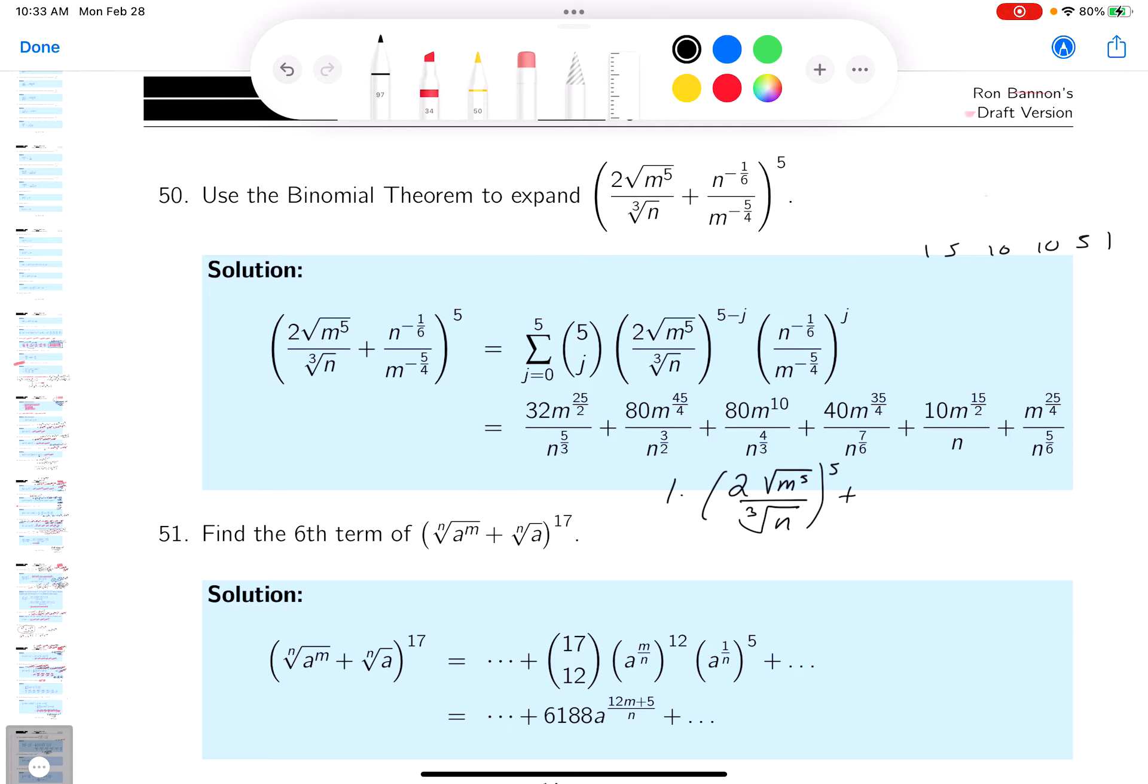What's the next term going to be? Plus 5, and then you get 2, the root of m to the 5 over the cube root of n, and now it's going to be to the fourth power.